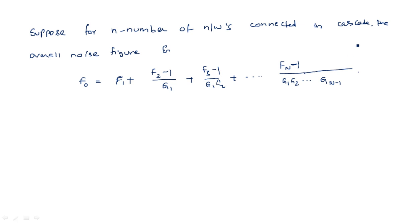So in this way we can calculate the overall noise figure for N number of networks connected in cascade. Thank you.